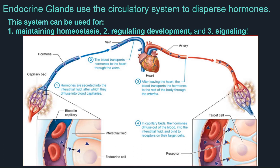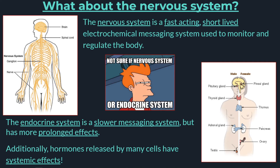Now, you may be thinking: wait, I thought that the nervous system did all of this too, and I thought it did it really fast — why do we need the endocrine system? You would be absolutely correct that the nervous system plays an indescribably important role in monitoring and regulating homeostasis. But where neurological impulses tend to be localized and short-lived, our endocrine system excels at having more prolonged effects.